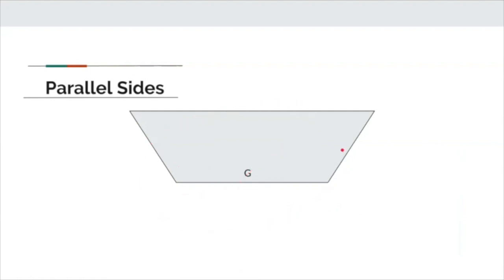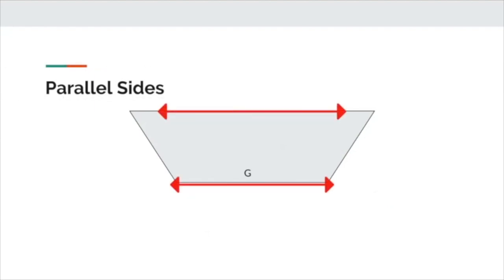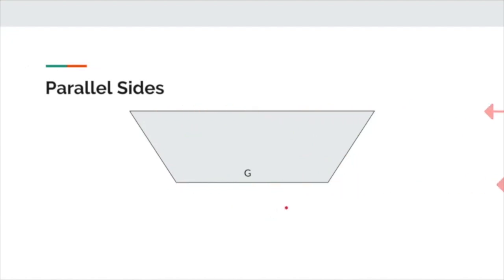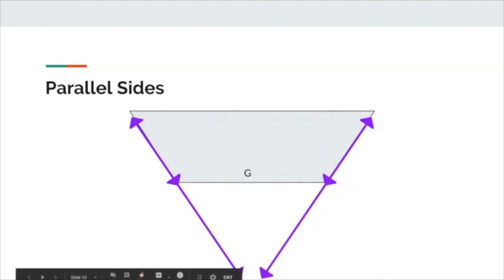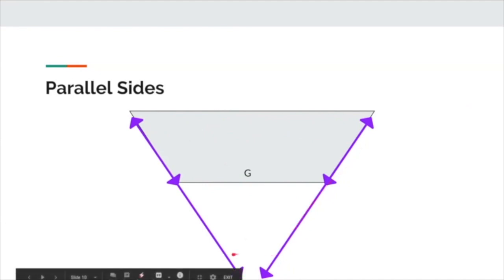Let's look at shape G, which is a trapezoid in the quadrilateral family, and try to figure out which sides are parallel. If you guessed the top and the bottom lines, you are correct. These two sides are parallel because the top and the bottom are straight, and if they were to continue to extend, they are not going to touch — they are equal distance apart. Now let's look at the other two sides: they're not parallel because once I extend those lines, they get closer and closer together and will eventually touch.